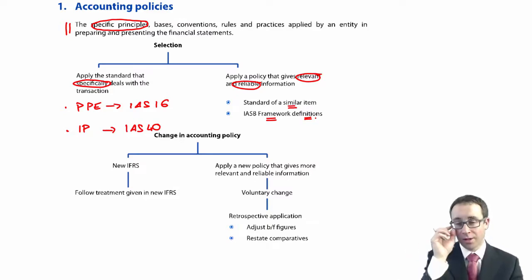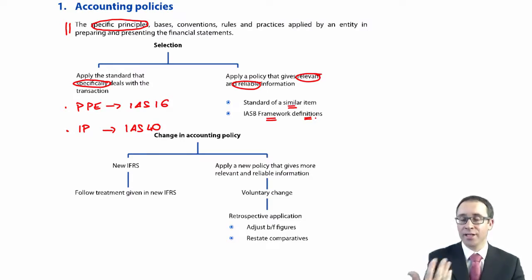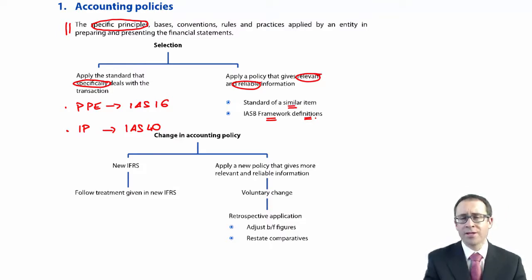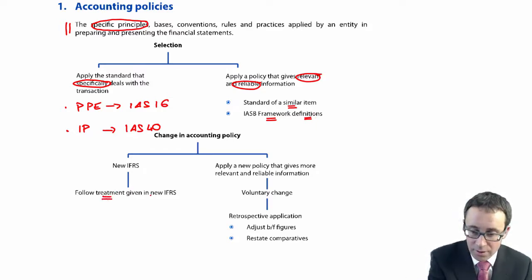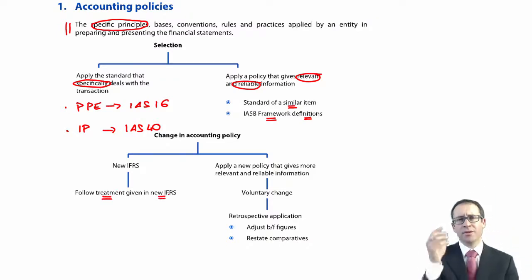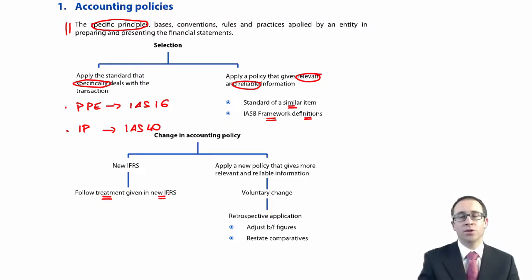We need to make sure that everything is consistent. If you have a change in accounting policy, it could be because of a new IFRS. We have recently seen new IFRSs launched — IFRS 15 with regards to revenue and IFRS 16 with regards to leases. If that's the case, then you just follow the treatment in the new IFRS, which will have all the implementation guidance about how to change to your new IFRS and how to deal with comparatives in the prior period.